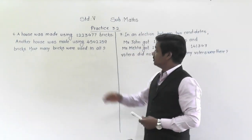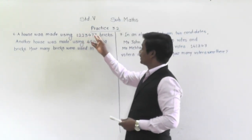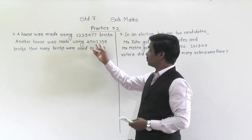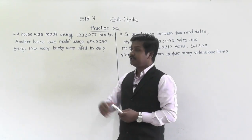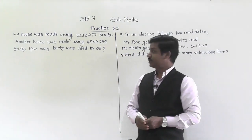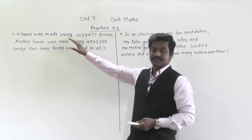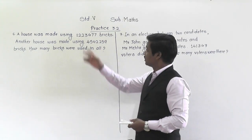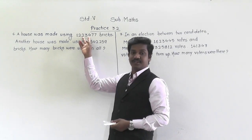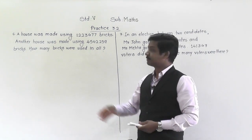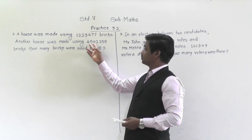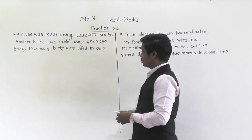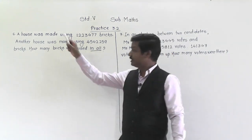A house was made using 12,23,477 bricks. Another house was made using 45,42,259 bricks. How many bricks were used in all? So there are two houses, and for both houses some bricks are needed. To build the first house, 12,23,477 bricks were used, and to build the second house, 45,42,259 bricks were used. In all means total — how many bricks were used to build both houses?